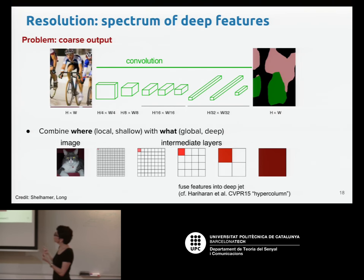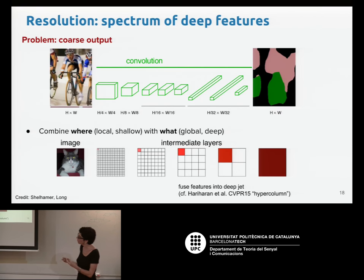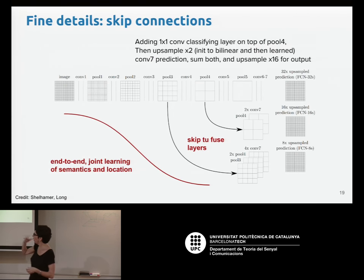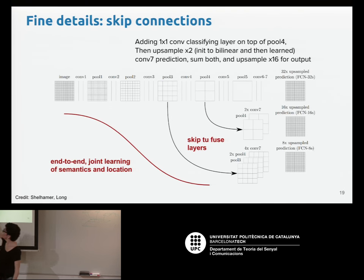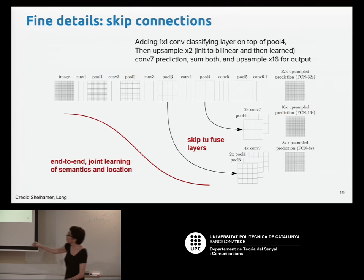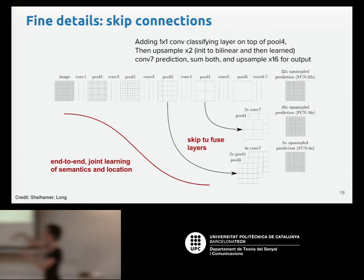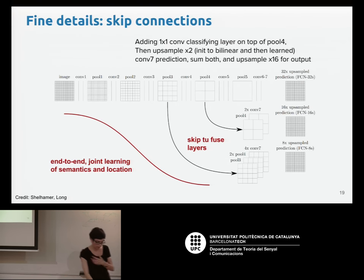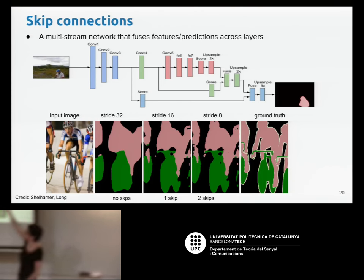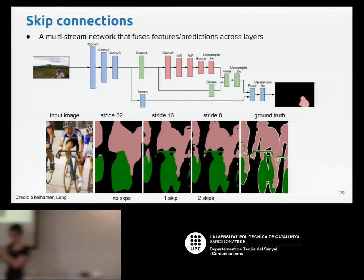The second problem is that predictions may be coarse, because we make predictions using features from the final layers which have global, coarse representations. The idea is to improve details by adding information from the earlier layers, which contain local information. This was the solution proposed in the Long model: combining predictions from the final layer with predictions from feature maps extracted from previous layers using skip connections. As we add more skip connections, we get more details in the final result.